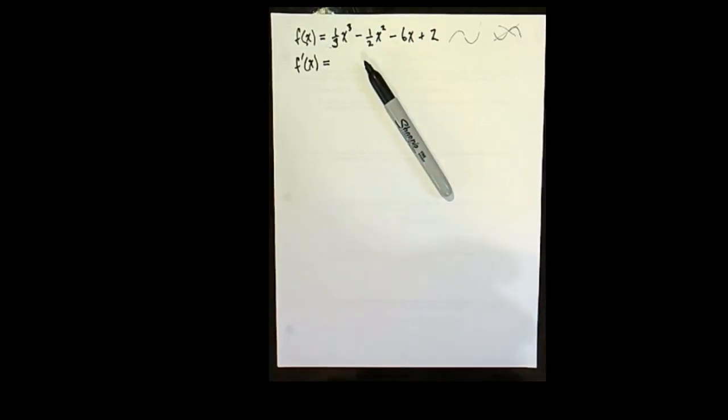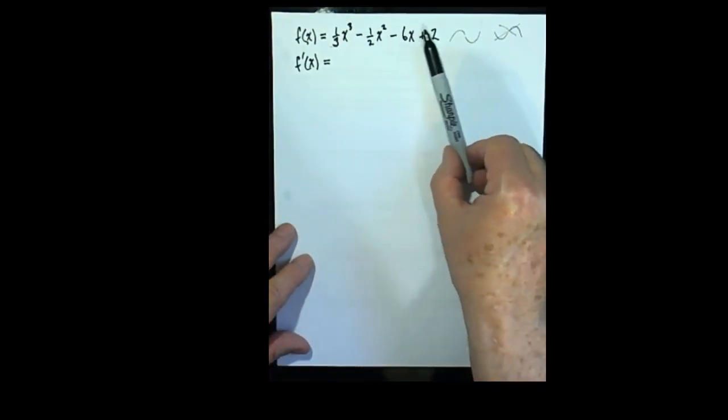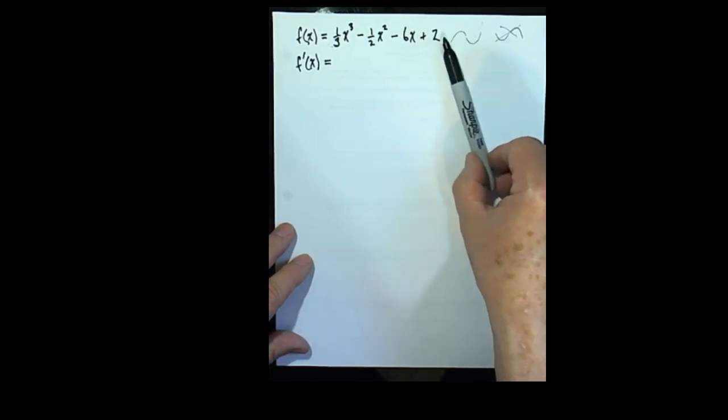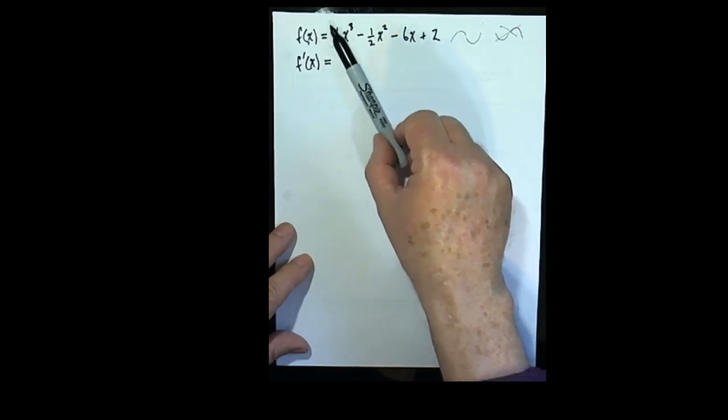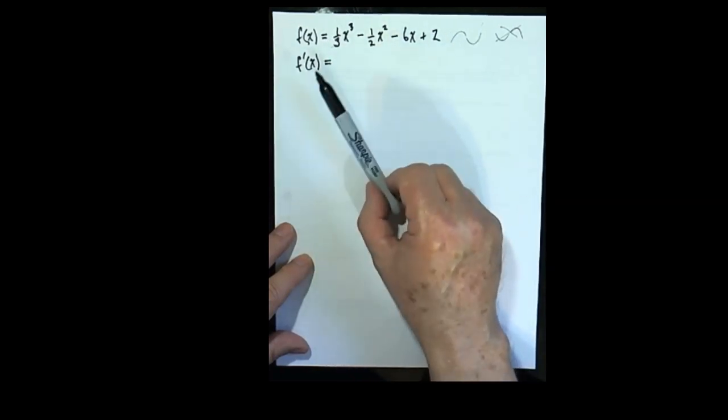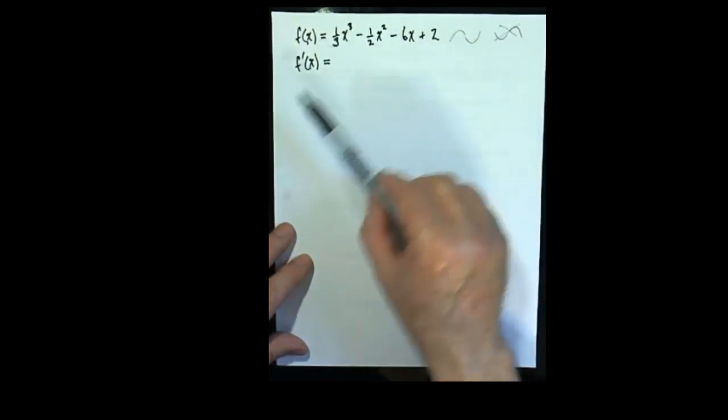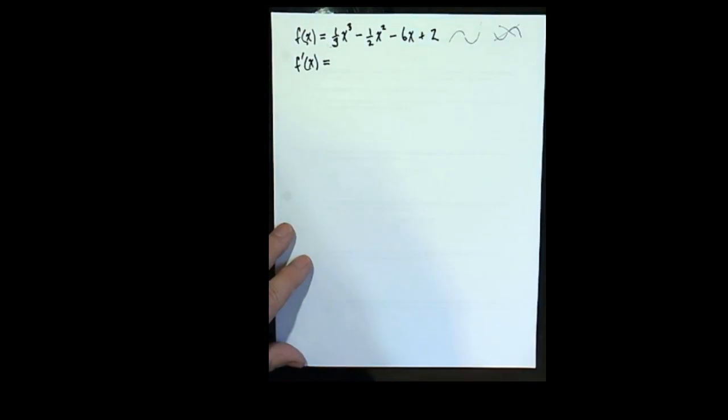Remember that the derivative tells us the slope of the line. Calculating the derivative here will be a matter of using the sum and difference rule, because this is the sum and difference of four other functions. The derivative of the first three are constant multiple rules, and the derivative of the fourth one is just the constant rule.